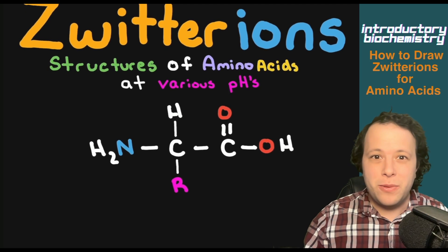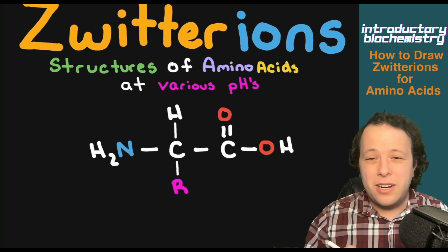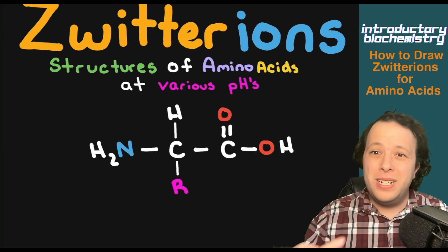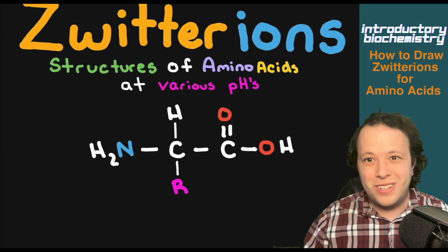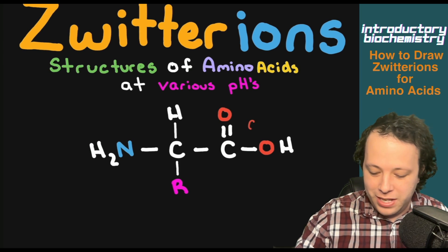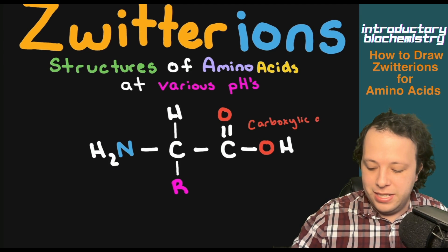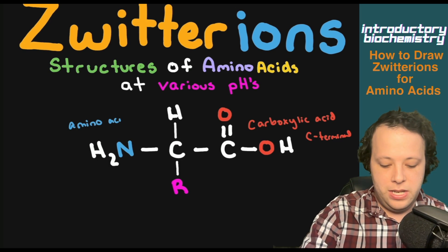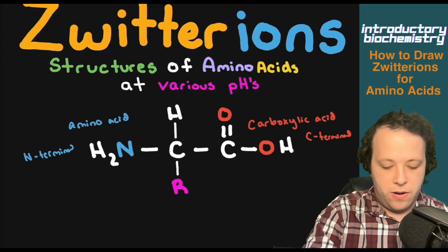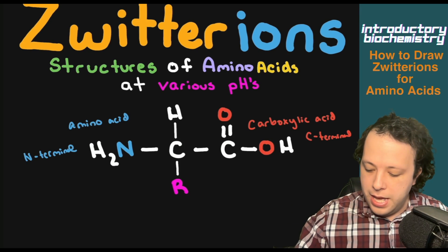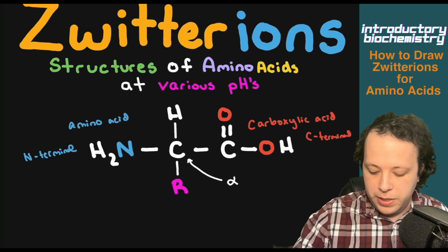We're going to start by looking at a normal amino acid. It does not actually exist in this form under physiological conditions — meaning when it's in the body — because your body is full of solutions. We have our carboxylic acid side, which is our C-terminal, our amino acid side on the left which is our N-terminal, our R group which is unique for each of the 20 amino acids, and that R group is located on what we call the alpha carbon.